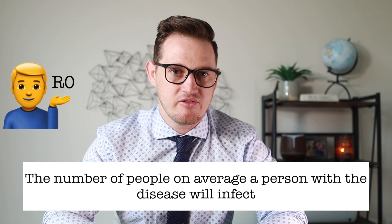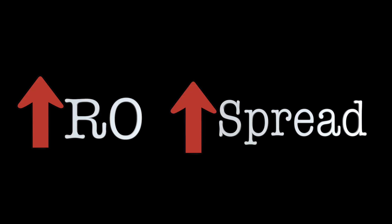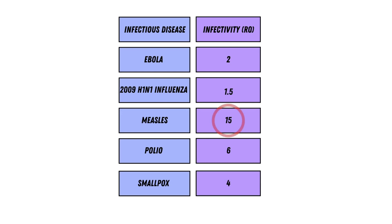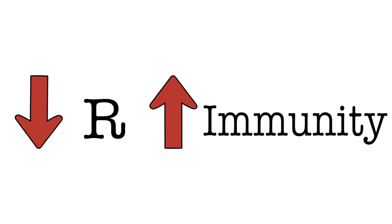Next we'll discuss the concept of infectivity, or R0, which is determined at the start of an epidemic and is defined as the number of people on average a person with the disease will infect. A higher value means the disease is more easily spread. For example, if you get measles you will likely infect 15 other people, assuming no one already has immunity. One important thing to realize is that the R number decreases throughout a pandemic because more and more people develop immunity.